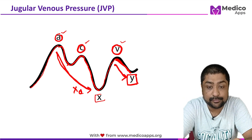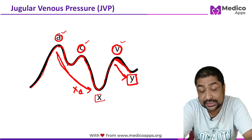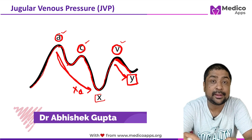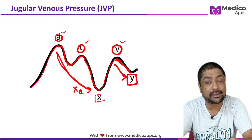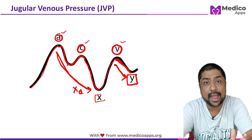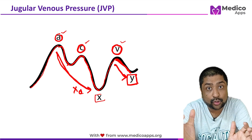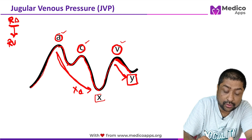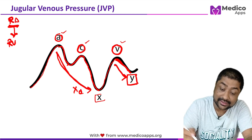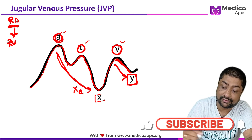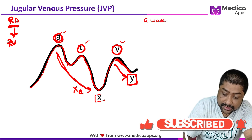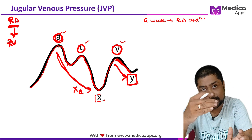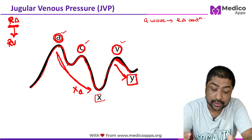To understand JVP, we first look at what causes these three waves and the physiology behind them. When the right atrium is filled, it will start contracting to push blood from the right atrium to the right ventricle. When this contraction happens, the pressure in the right atrium will increase, and this is what causes the first peak — called the A wave. So the A wave is because of right atrium contraction.